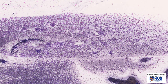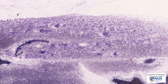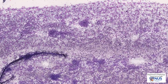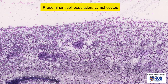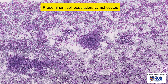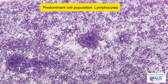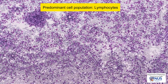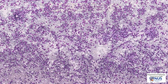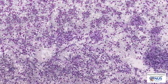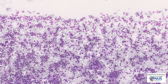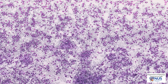Here is a final case from a left thyroid nodule in an elderly patient. We can see that the predominant cell population is lymphoid in nature, and as we look around, we do not really see any readily identifiable thyroid follicular cells.